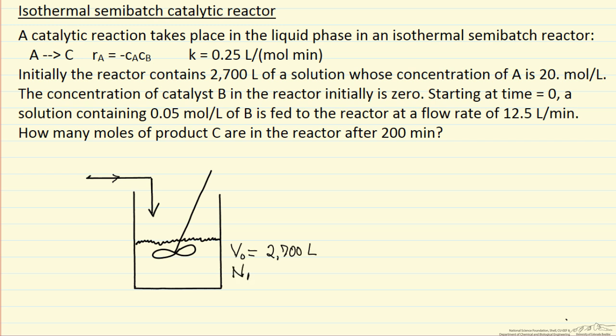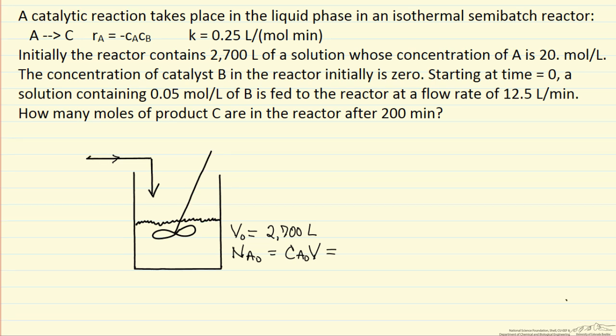We know the initial number of moles, that's going to be the initial concentration times the volume. The initial concentration is 20 moles per liter, and the volume is 2700 liters. So we have initially 54,000 moles of A. The number of moles of B initially is 0, the number of moles of C initially is 0.